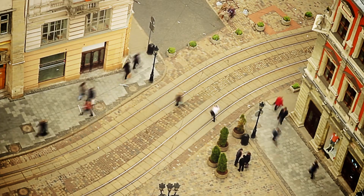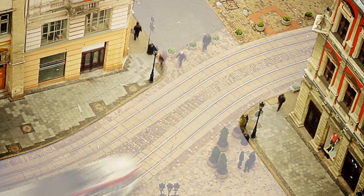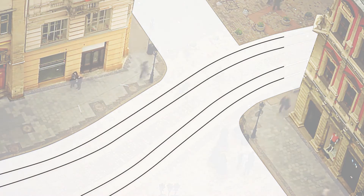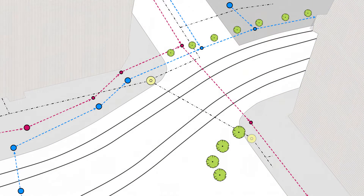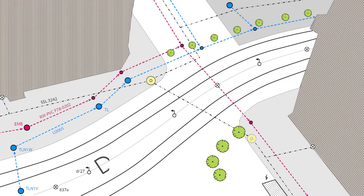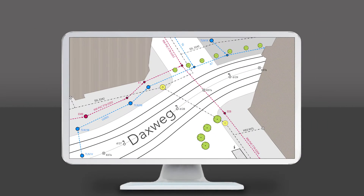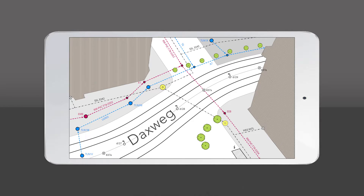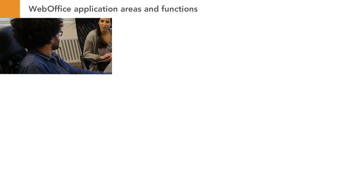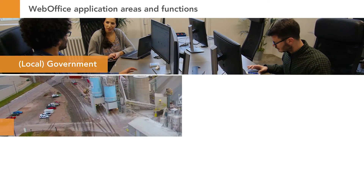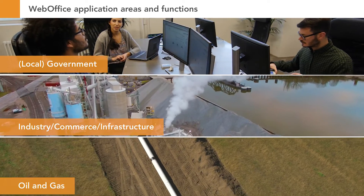Real estate, infrastructure and public transport — three examples visible in this scene where spatial information helps you to keep track of your assets. Synergy's WebOffice optimizes work processes and offers a browser-based user interface. Work anywhere, device-independent on your desktop computer, tablet or mobile phone. Let's take a closer look at popular application areas and the most important features of WebOffice, based on three common industries.